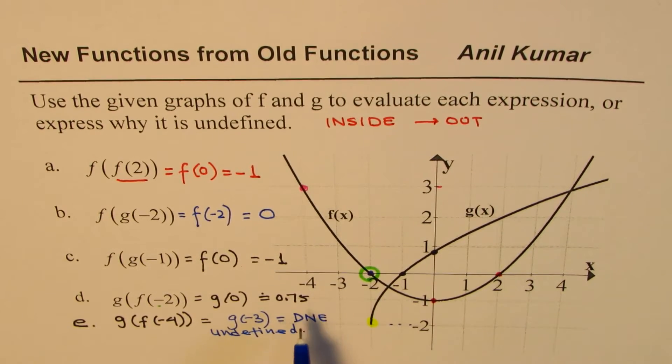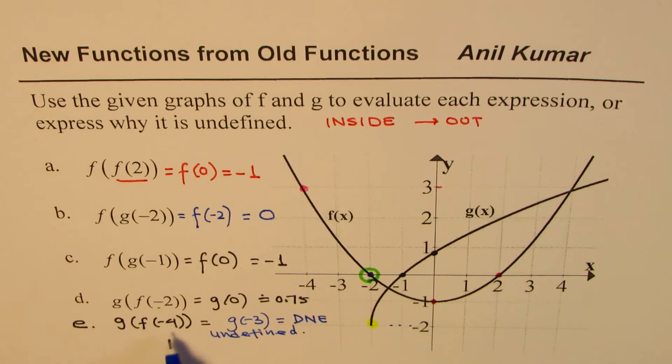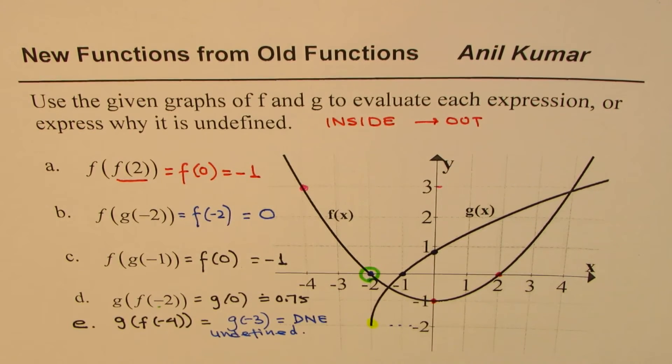So it is important to note that if the value is out of the domain of the outside function, that means the range of inside function is not coinciding with the domain of the outside function, then we do not have a defined result. So in that case we may get undefined value. I hope with this exercise you clearly understand functions of functions and how to evaluate them using their graphs.